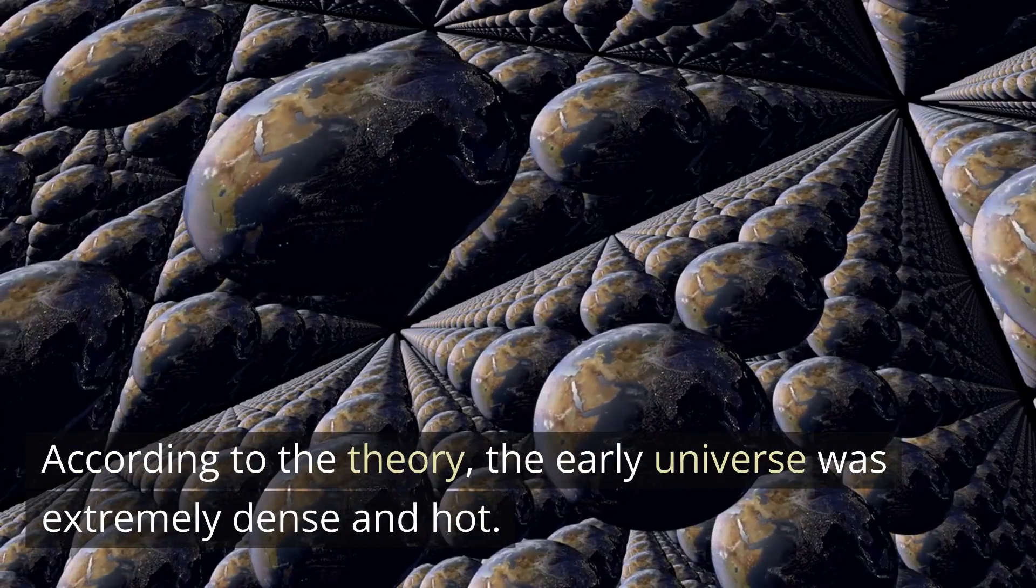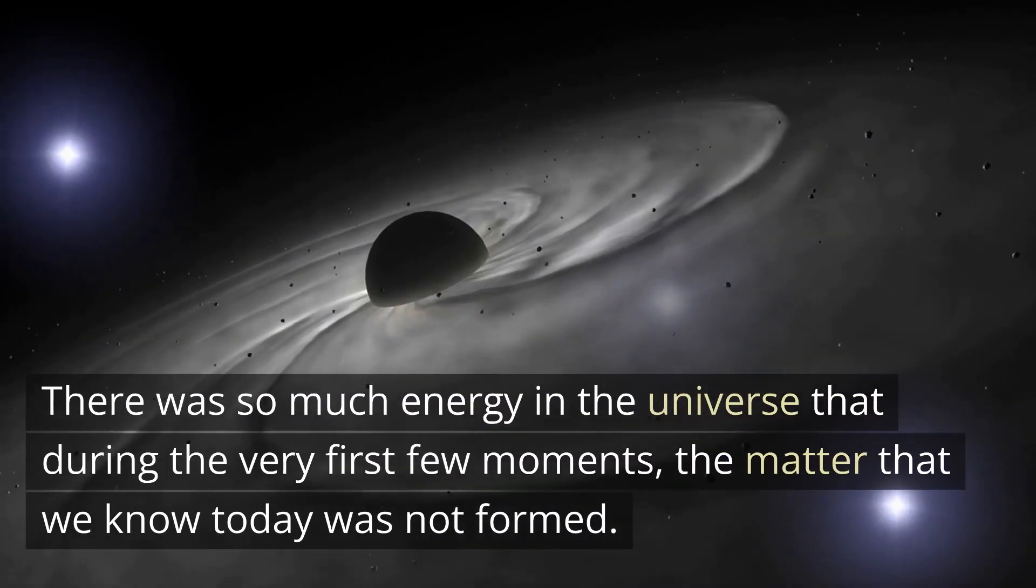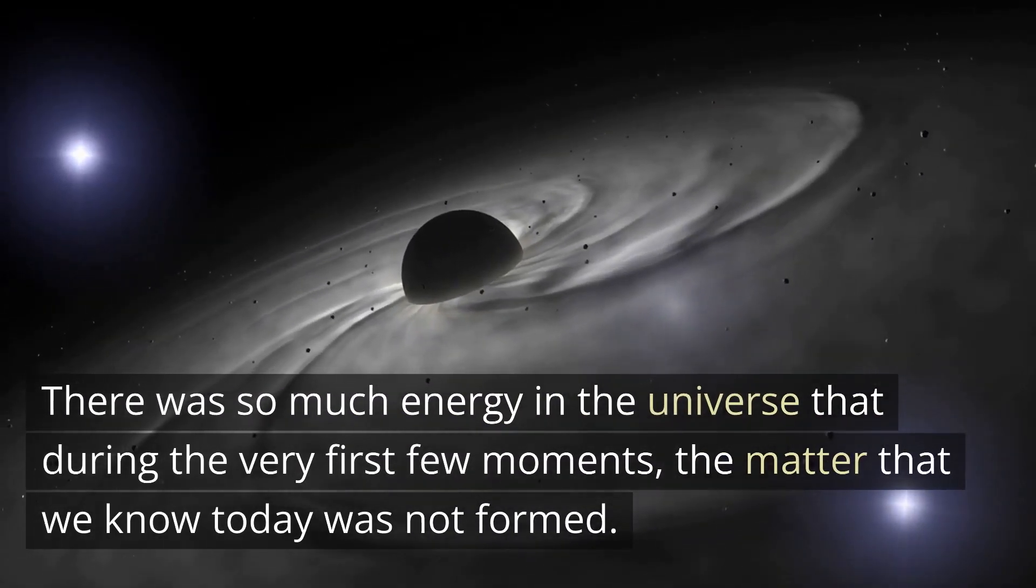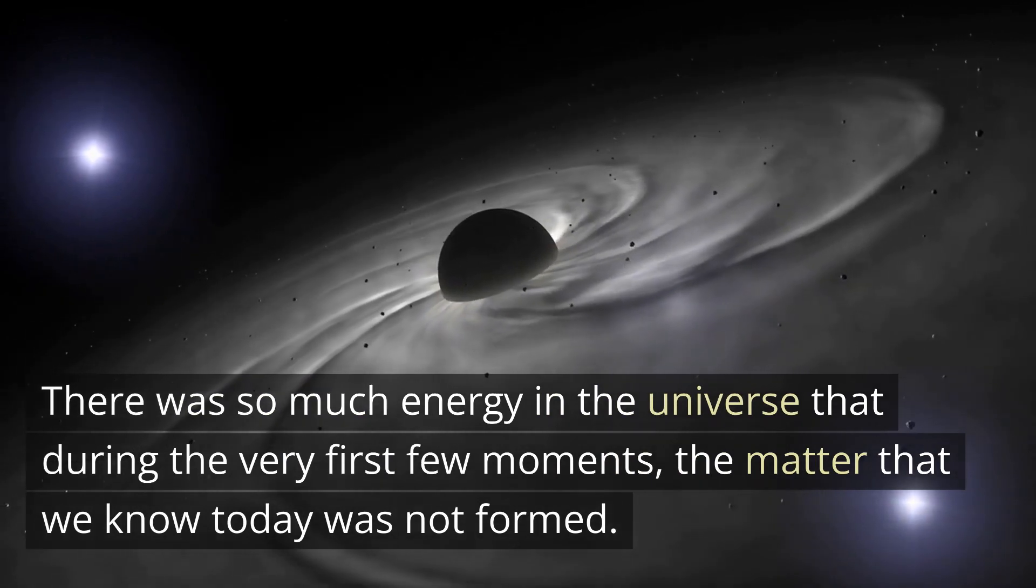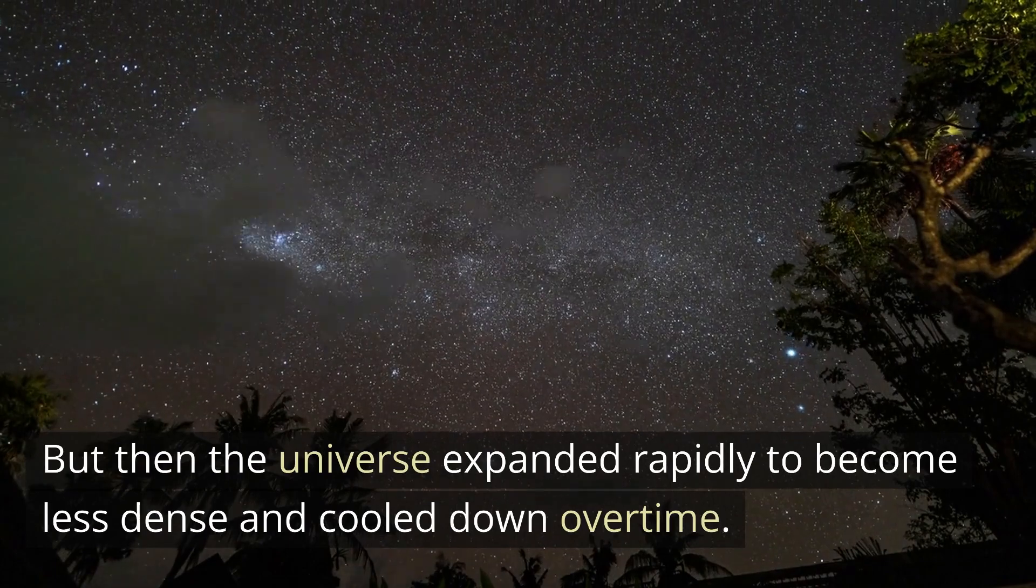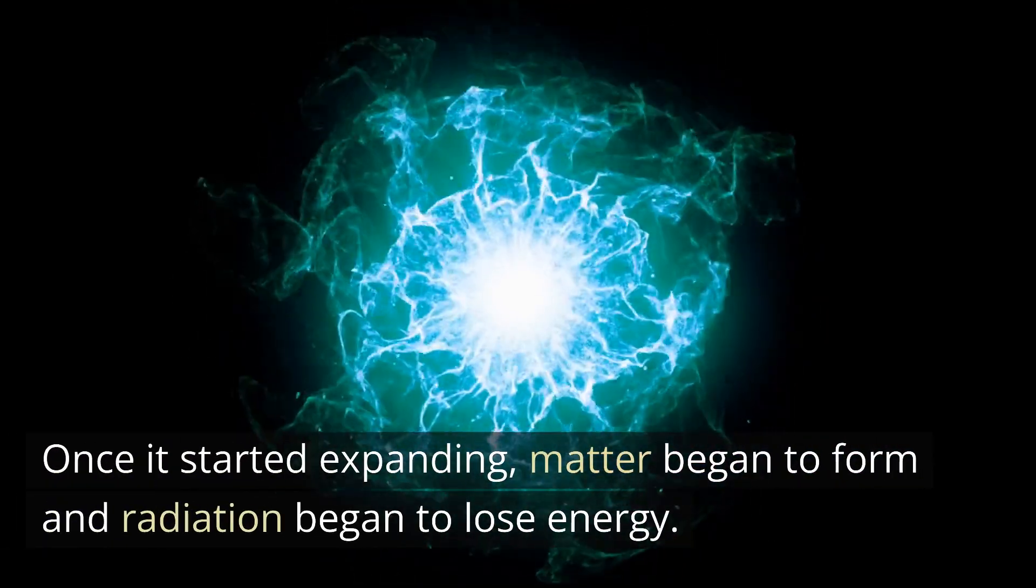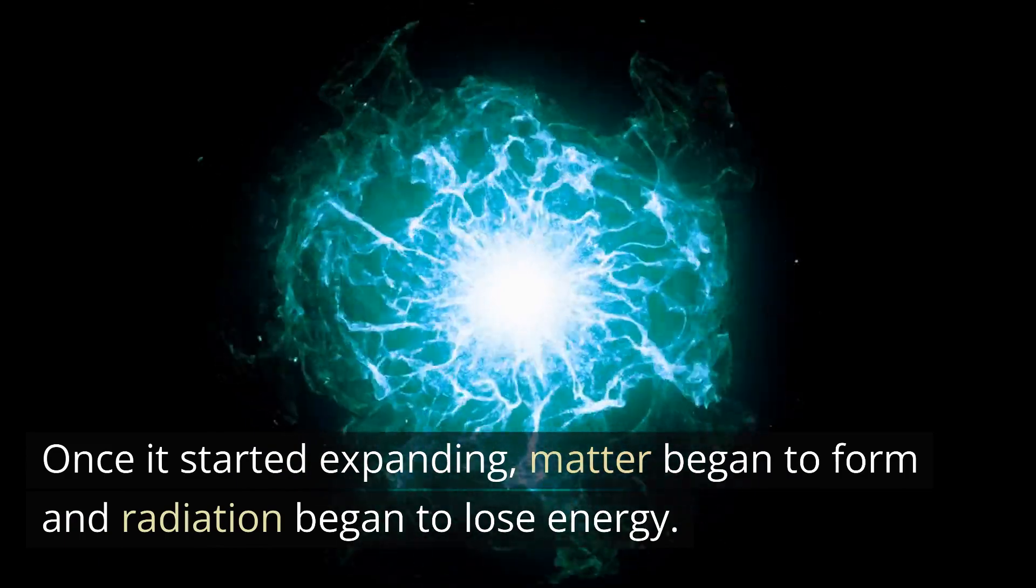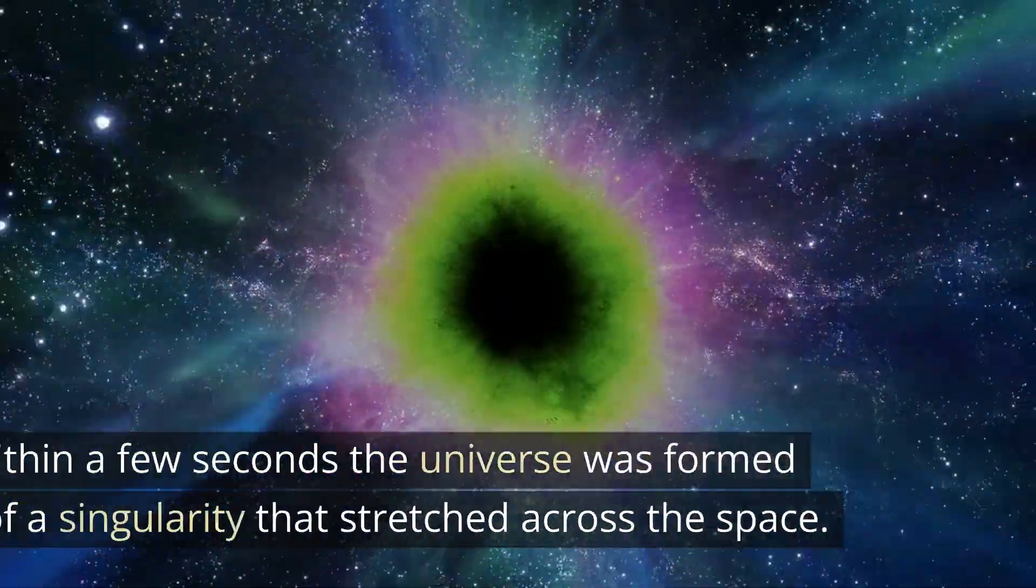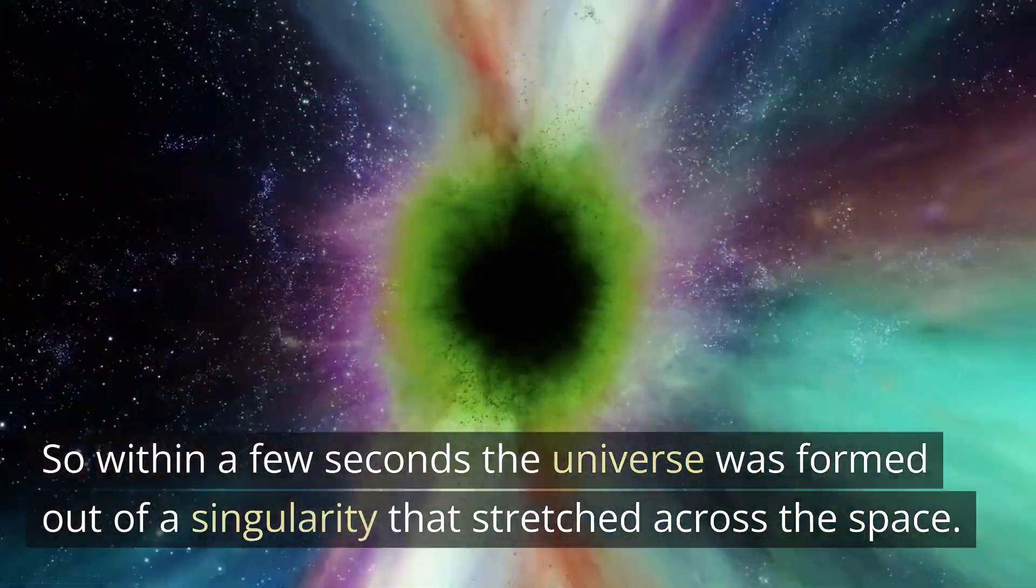According to the theory, the early universe was extremely dense and hot. There was so much energy in the universe that during the very first few moments, the matter that we know today was not formed. But then the universe expanded rapidly to become less dense and cooled down over time. Once it started expanding, matter began to form and radiation began to lose energy. So within a few seconds the universe was formed out of a singularity that stretched across space.